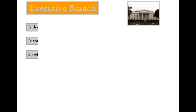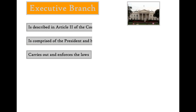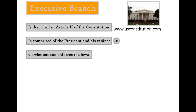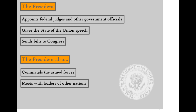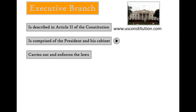The Executive Branch is described in Article II of the Constitution. It is comprised of the President and his Cabinet. The President appoints federal judges and other government officials, gives the State of the Union speech, and sends bills to Congress. The President also commands the armed forces and meets with leaders of other nations. The Executive Branch also carries out and enforces the laws.